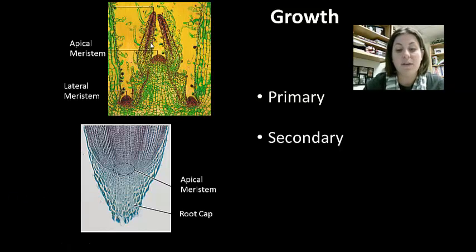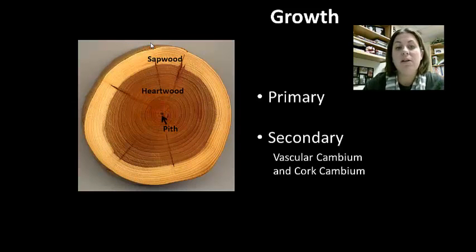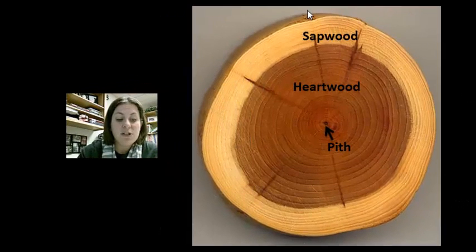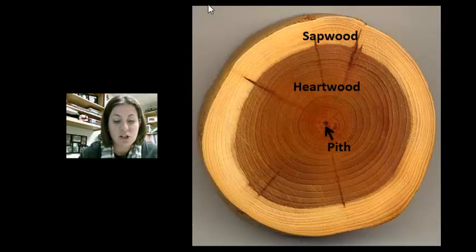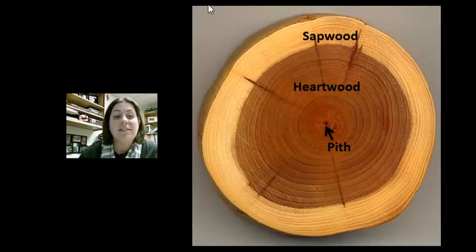Secondary growth is when roots or stems grow in girth — in width — as seen in woody plants. This girth is due to secondary xylem and phloem produced by the vascular cambium, another type of meristem tissue. As these cells grow and mature they create wood: heartwood toward the center and sapwood on the outside. The cork cambium at the edges produces bark, which waterproofs and protects the secondary xylem and phloem.